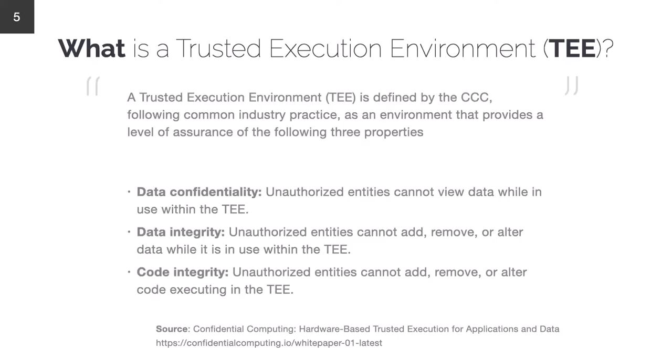So what is a trusted execution environment? At the Confidential Computing Consortium we came up with a definition that brings up three properties a TEE must have: data confidentiality, data integrity, and code integrity. Data confidentiality means unauthorized entities cannot view data while it's in use within the TEE. Data integrity means unauthorized entities cannot add, remove, or alter data while it is in use. Code integrity means unauthorized entities cannot add, remove, or alter code executing inside the TEE.